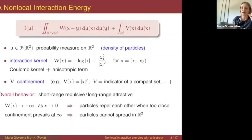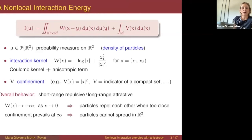This repulsive-attractive behavior is rather typical in non-local interaction problems. For instance, in applications to biology where particles are individuals, in many biological systems individuals tend to repel each other — they don't want to be too close to avoid collision — but on the other hand there is an attractive behavior at larger distances, in the sense that individuals want to aggregate into cohesive groups.